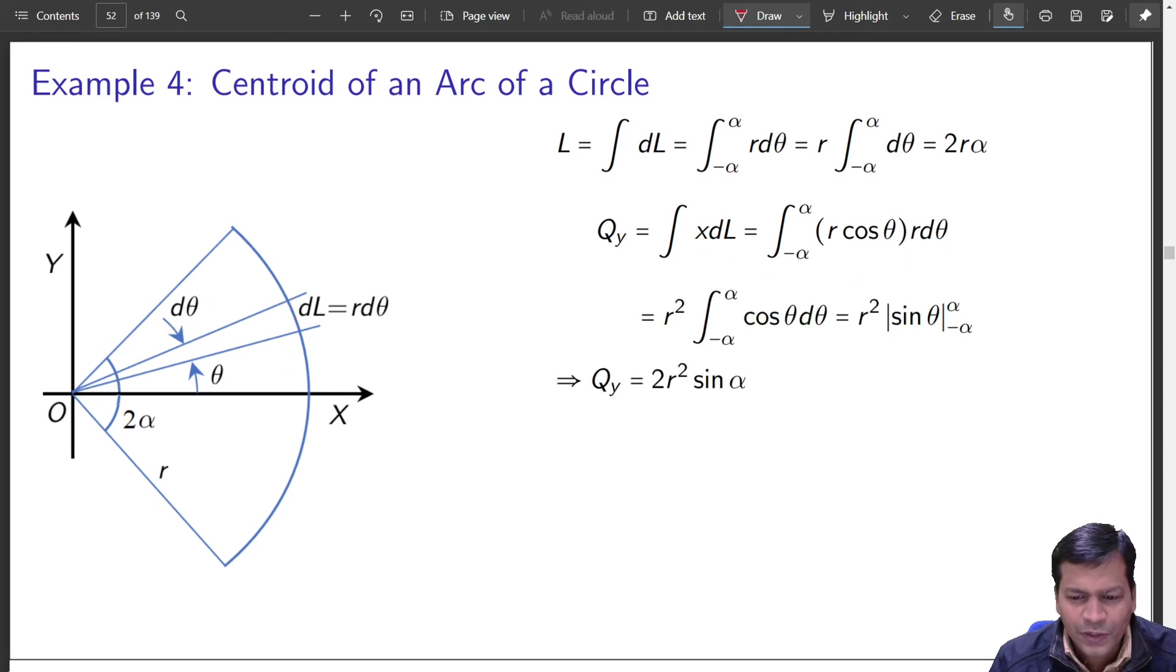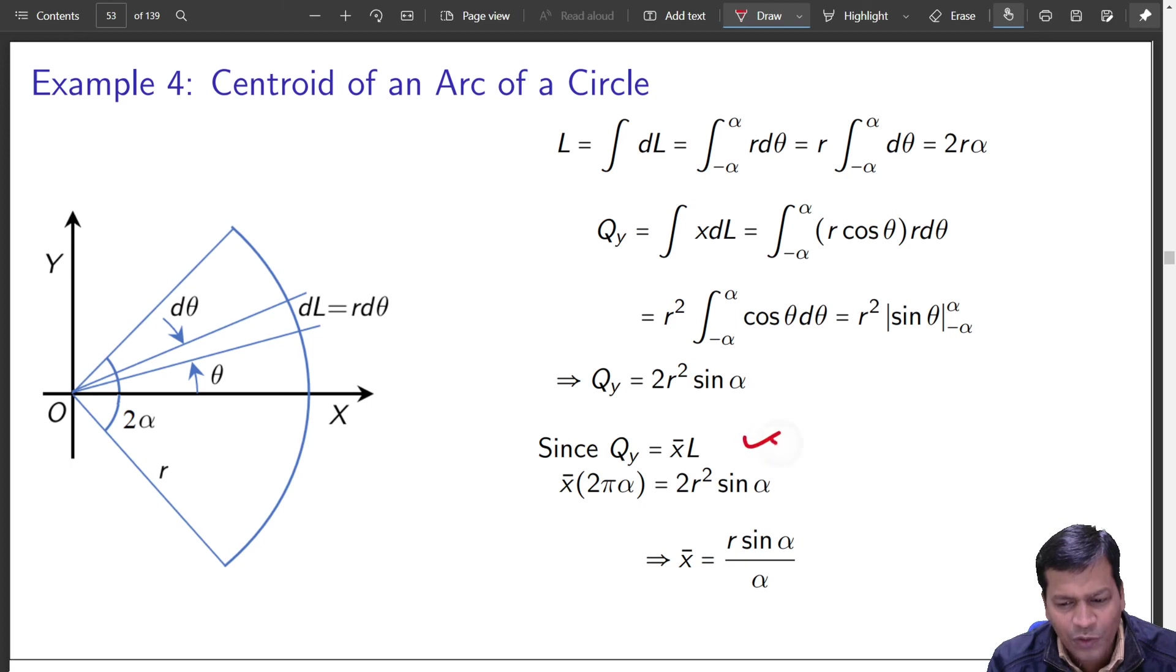So if you integrate that, you can quickly get Qy as this. So since Qy is equal to x bar times of L that is using your first principle that you have derived earlier. So x bar will be directly given by this. L is total length. X bar times of L should be equal to Qy and Qy is already known. So that gives you x bar something like this. And y bar will be because it is symmetrically placed on either side, it will be 0. Very good.